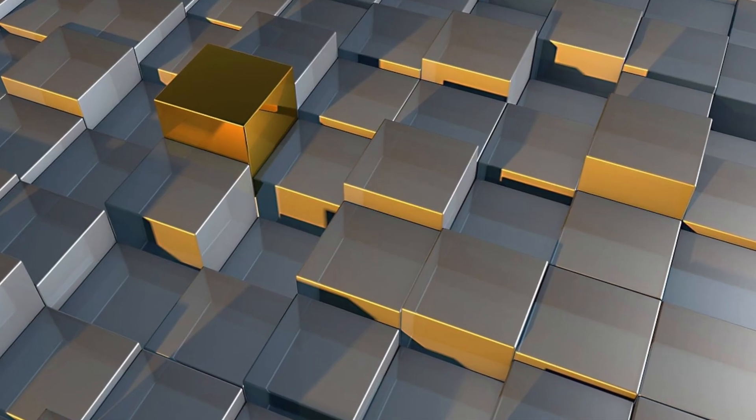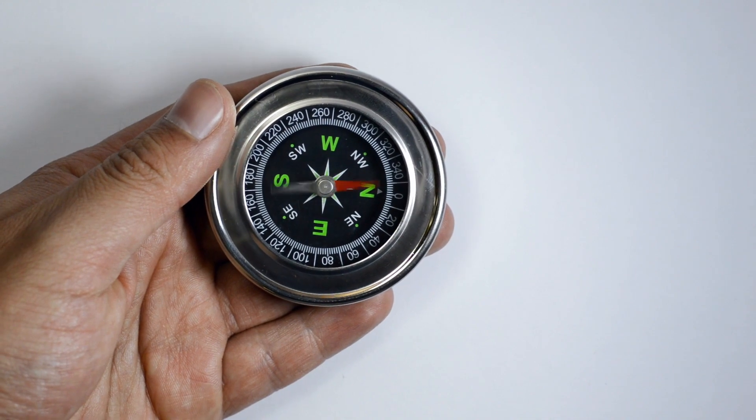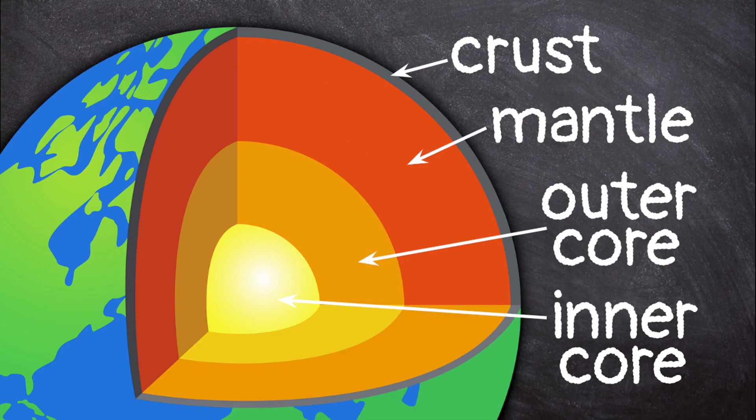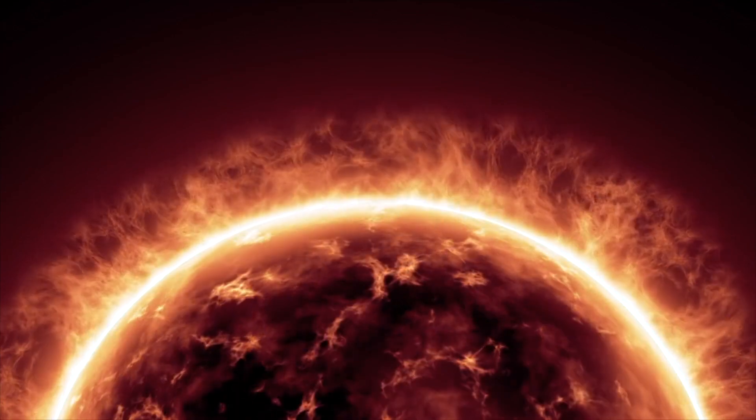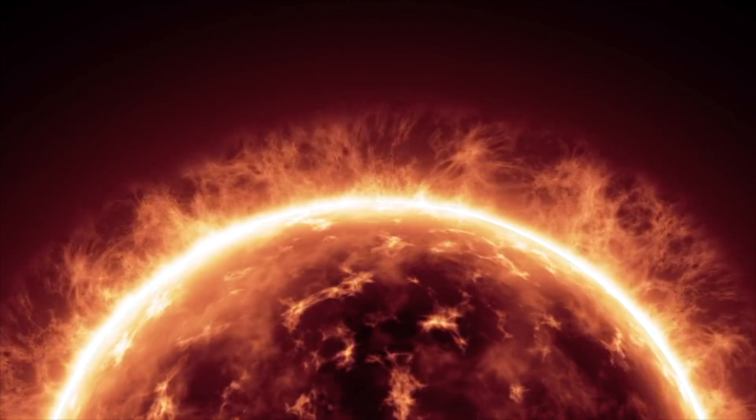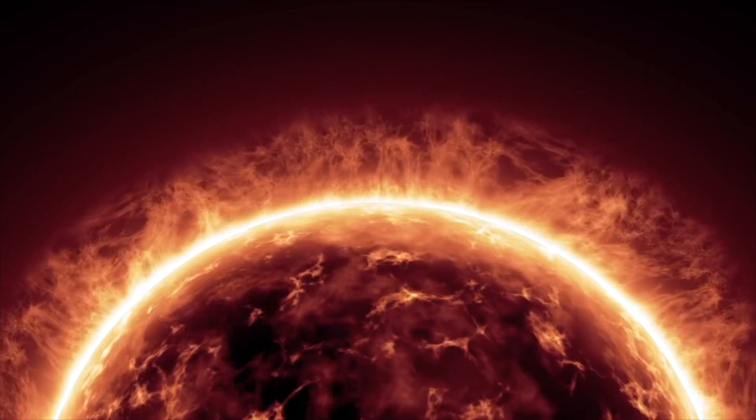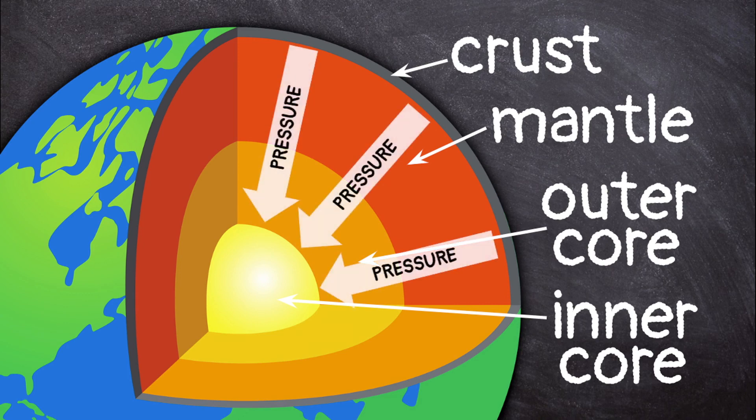At the very center of Earth is a solid ball of iron and other minerals called the inner core. The center of the Earth is extremely hot, with temperatures reaching 9,000 to 13,000 degrees Fahrenheit. The extreme pressure at the center of Earth keeps the inner core from melting.